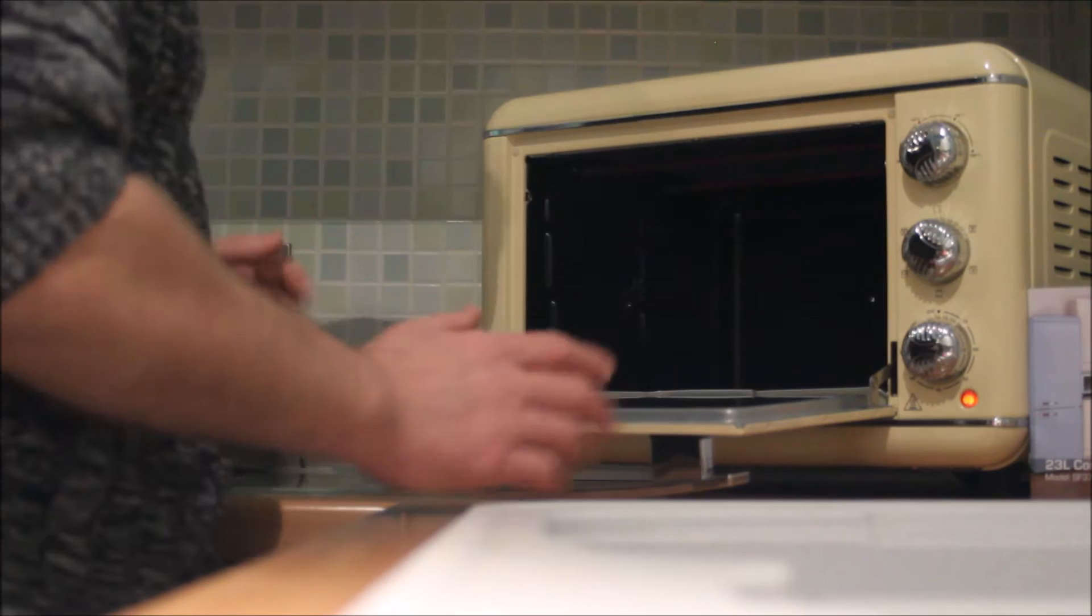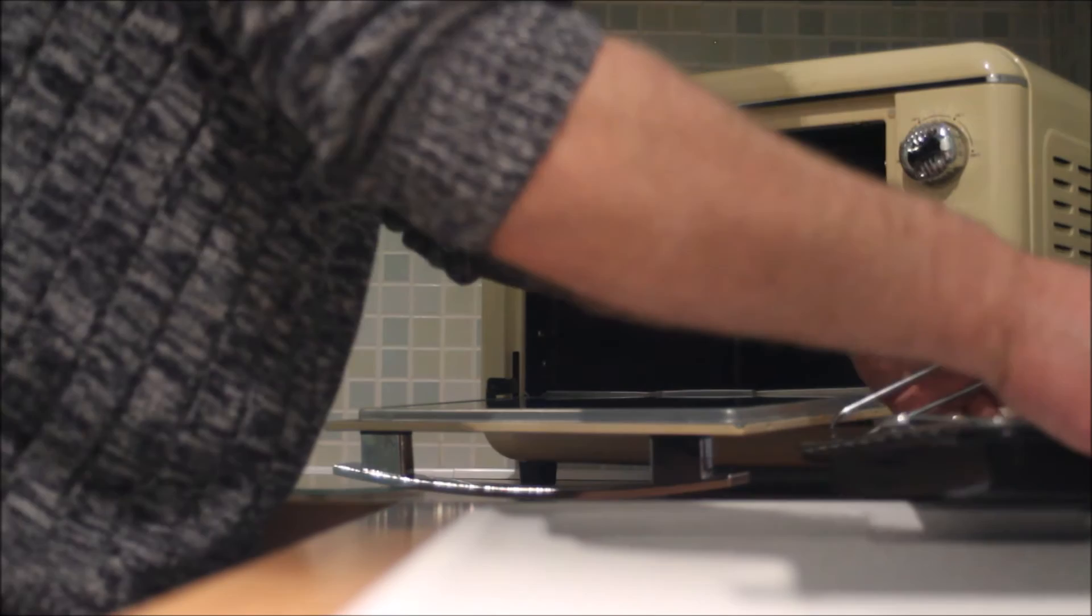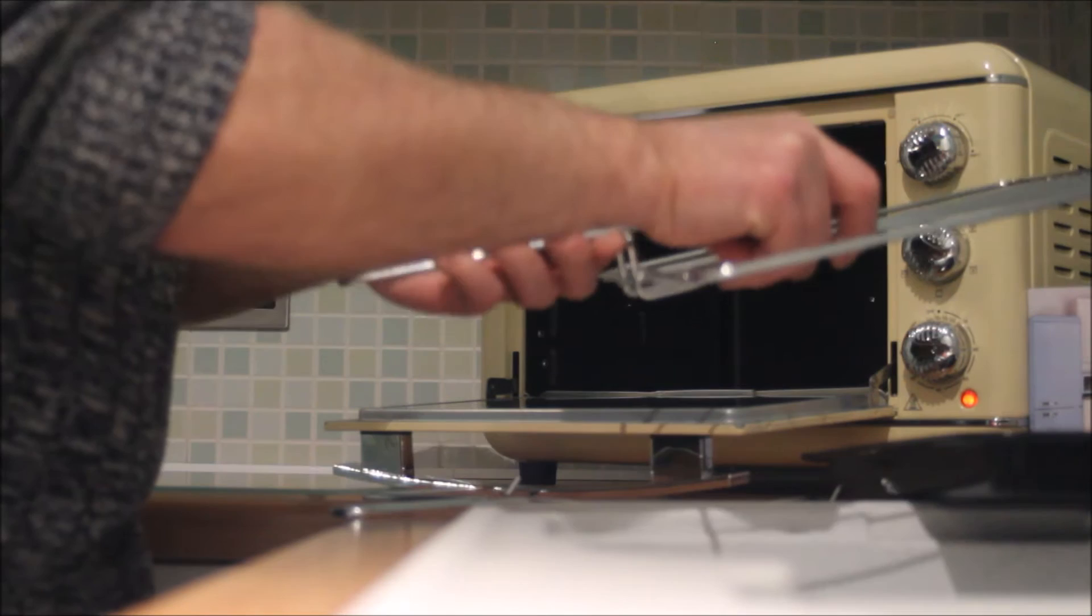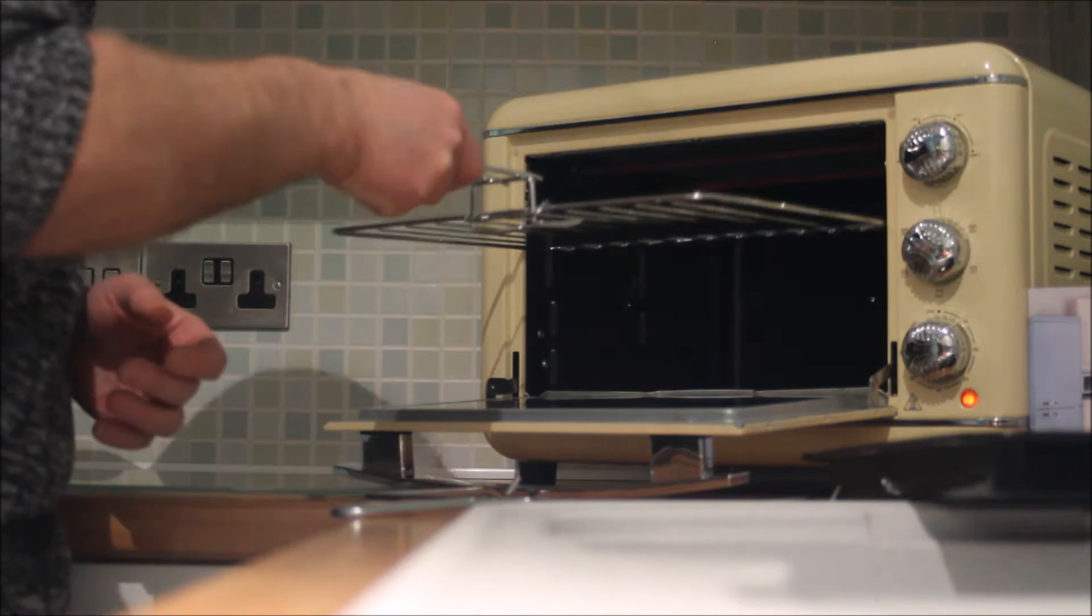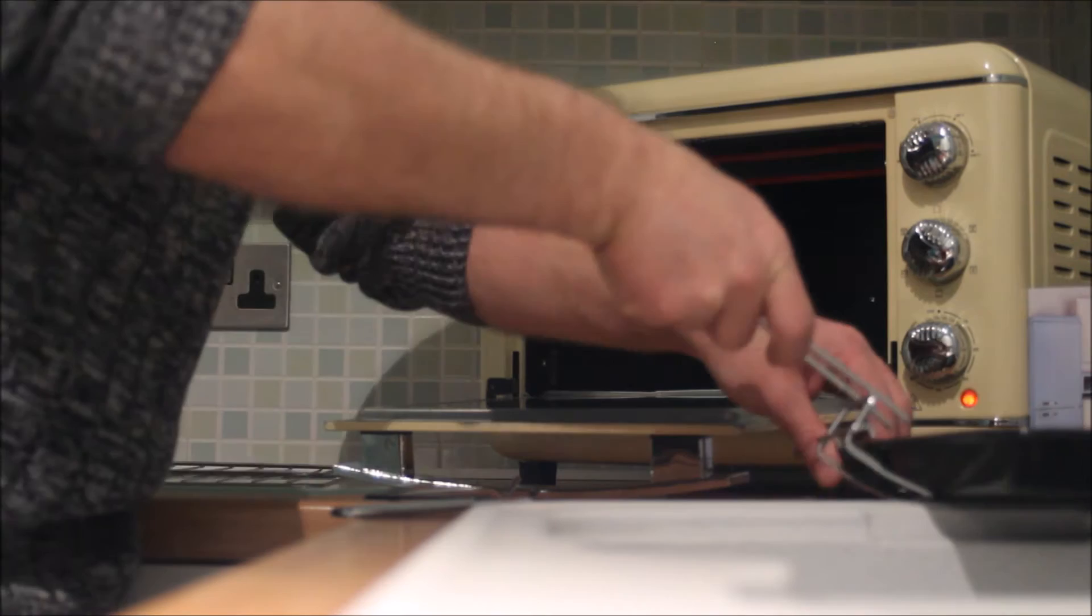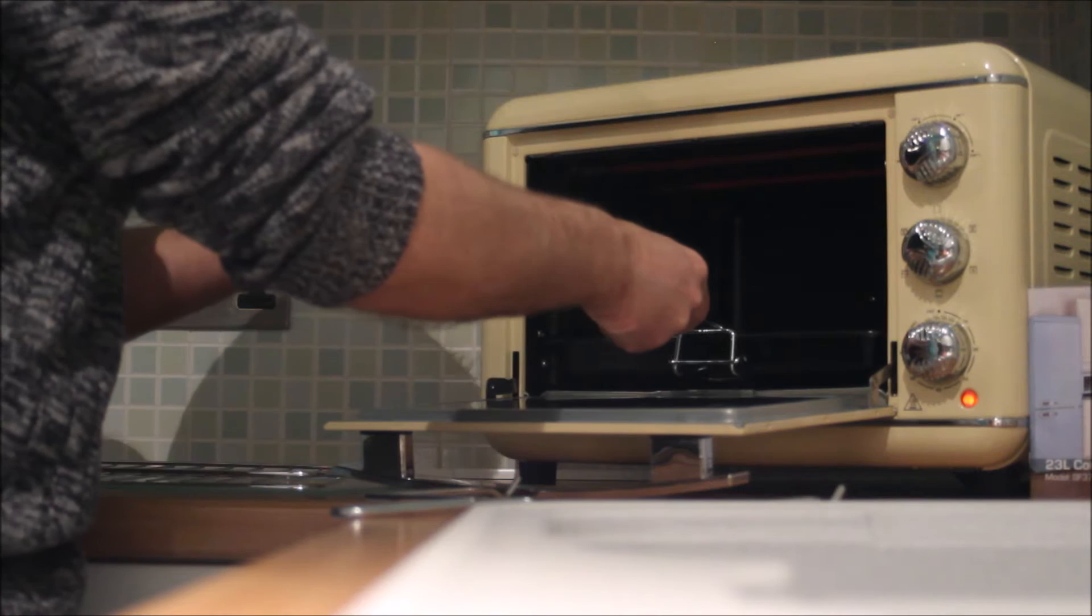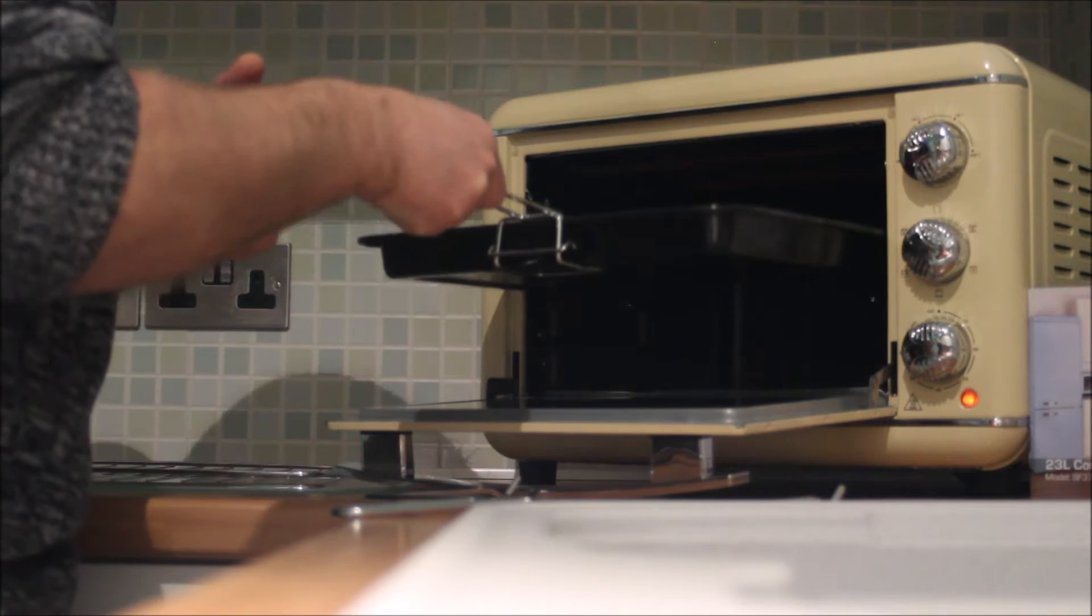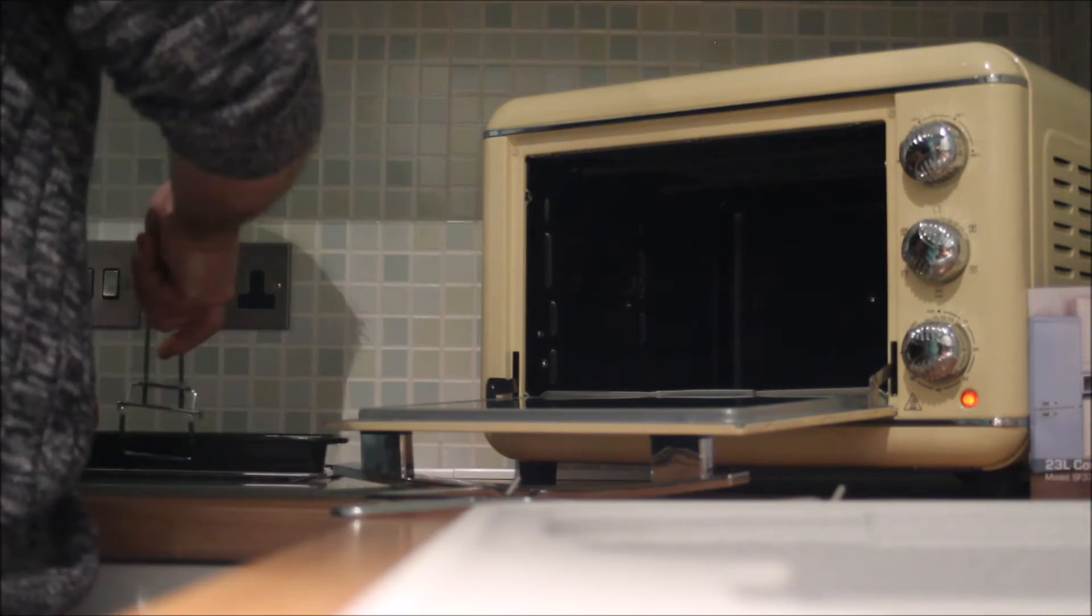The oven comes with a few bits. We have a wire rack which goes in one, two, three different shelf levels. And we also have a drip tray. Again we can mainly put on the bottom level. Well suppose if you want to cook something you can probably just put it in the top there.